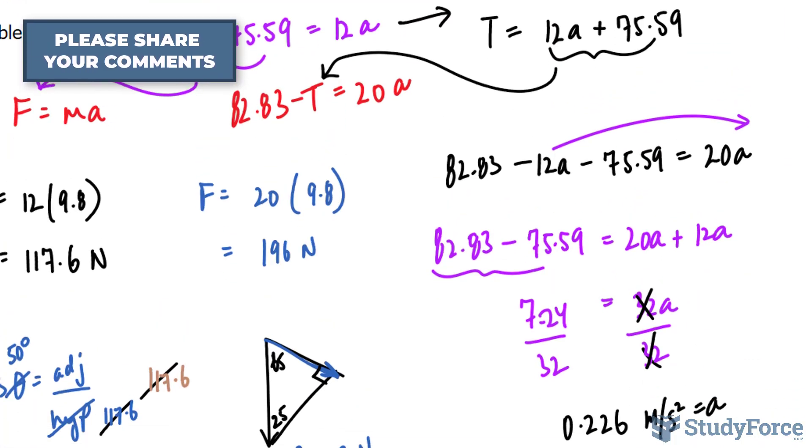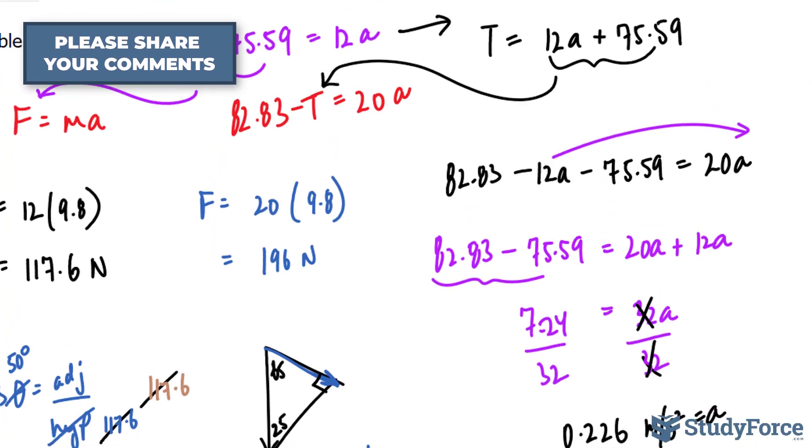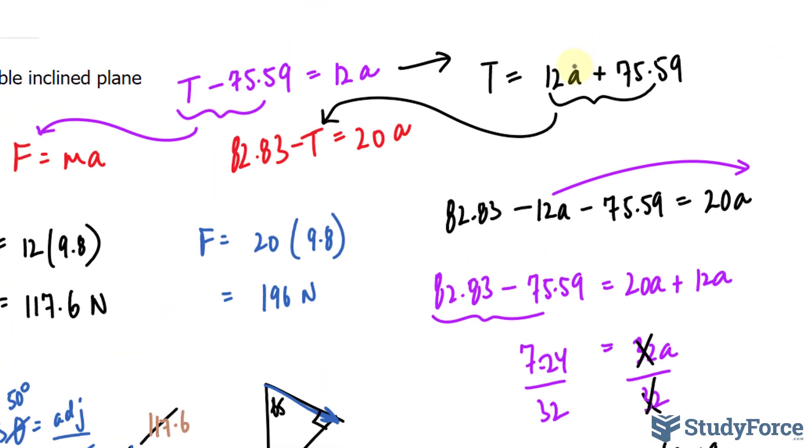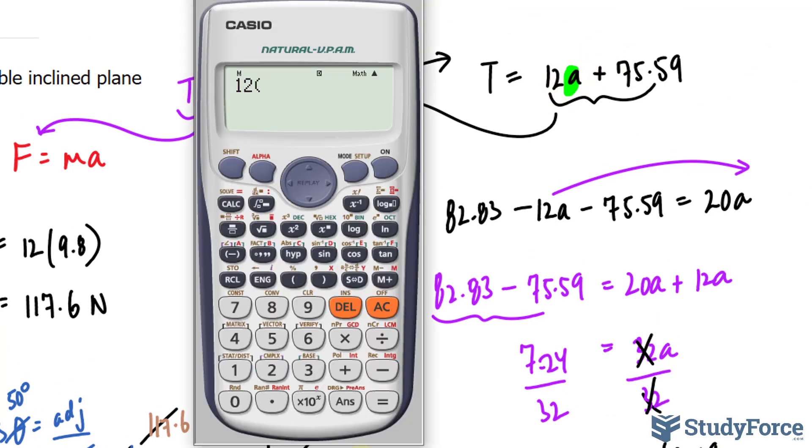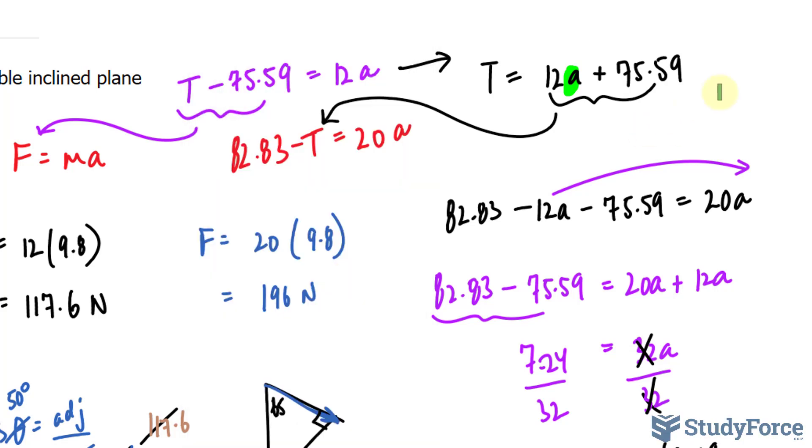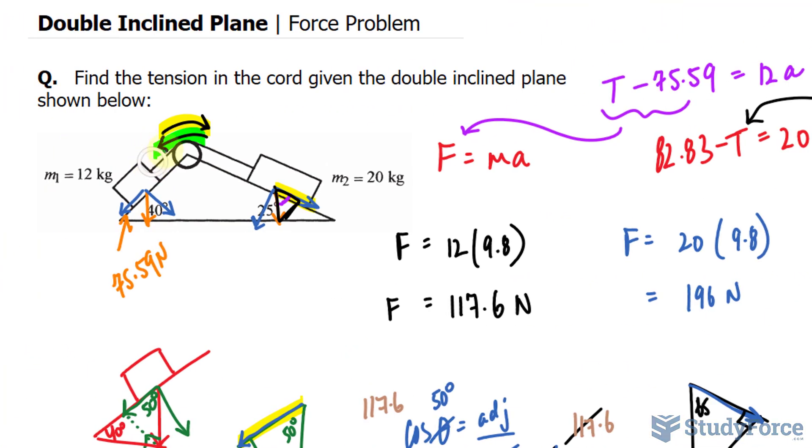Now, to find the tension of the chord, we will take this value and throw it right into there, right into here. So, I have 12 times the number that I just got plus 75.59 and that makes 78.30 as the tension. So, the tension, which is a force, is 78.3 newtons. So, that is the tension along this chord given the two masses being connected. So, there you have it. Now, you know how to solve double inclined plane force problems.